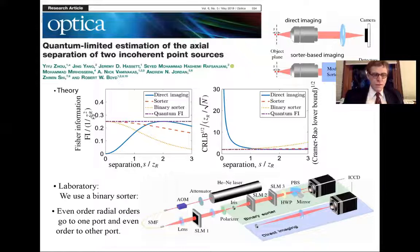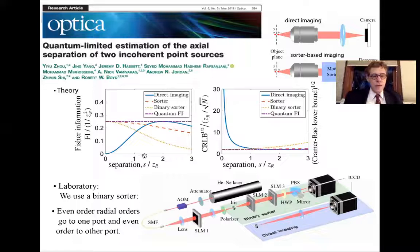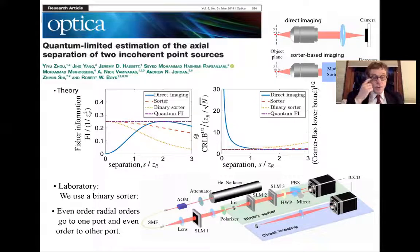Here is a theory plot. Again, this is the Fisher information plot as a function of separation. And once again, for direct imaging, the Fisher information drops to zero at small separations. Once again, this horizontal line here is the quantum Fisher information. It does not drop at all. But then, the question is, in the laboratory, how close can you get to it? Well, if you have an ideal sorter, that means it sorts every one of the modes, or at least every one of the populated modes that's present in the image, you get this result here. We instead use what's called a binary sorter. And this works, it really works very well, although it does not achieve the optimum.